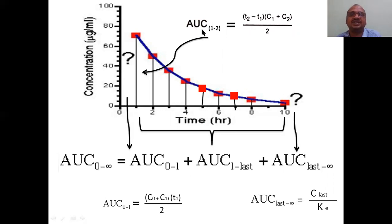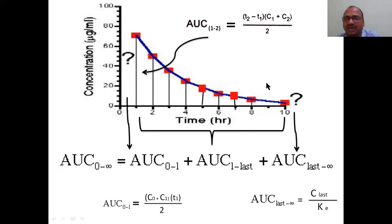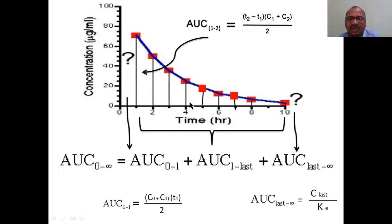AUC from time 1 to 2 is calculated using the trapezoidal formula. The same formula applies for AUC 2 to 3, AUC 3 to 4, AUC 4 to 5, AUC 5 to 6, AUC 6 to 7, and so on for each trapezoid. From here to here you use this formula. AUC 0 to 1 uses a special first-trapezoid formula.